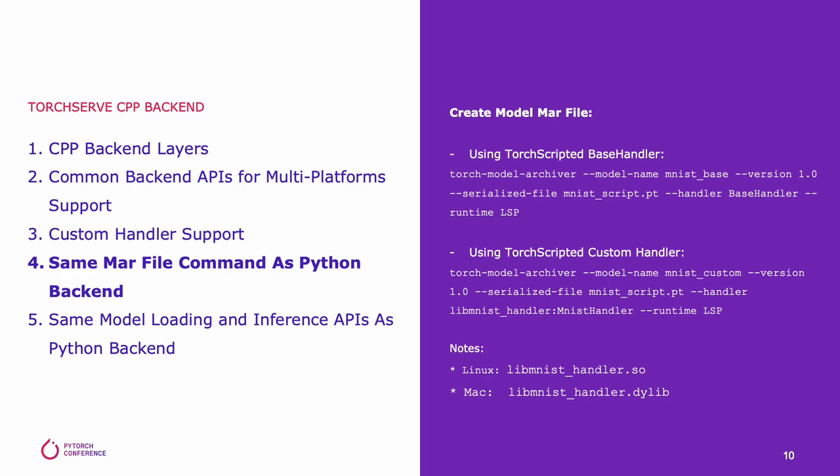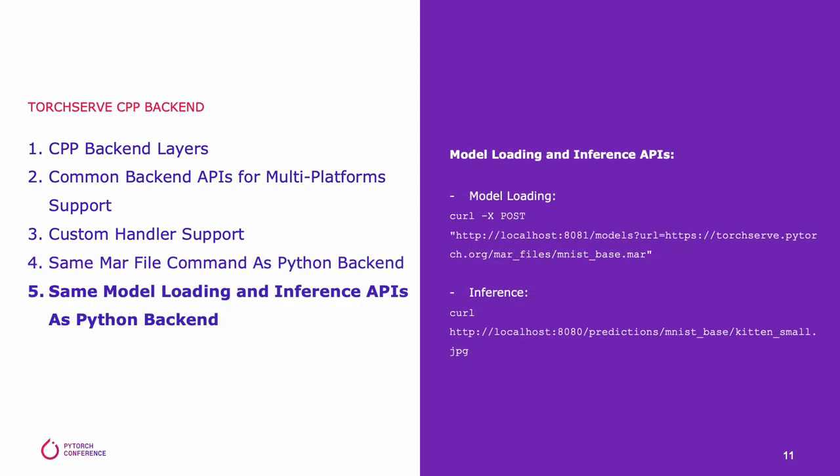For example, users are able to use the TorchScript base handler to build a model .mar file. Users are also able to build a custom handler dynamic library and then wrap it in a model .mar file using the model archival command. Finally, users are able to load the model and run prediction using the same REST API or gRPC API as the Python back-end.